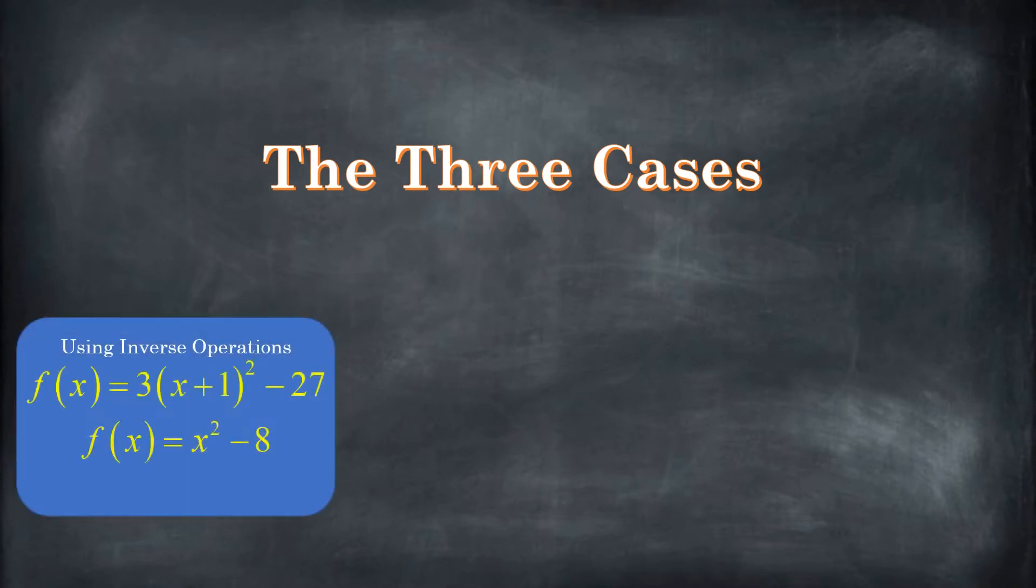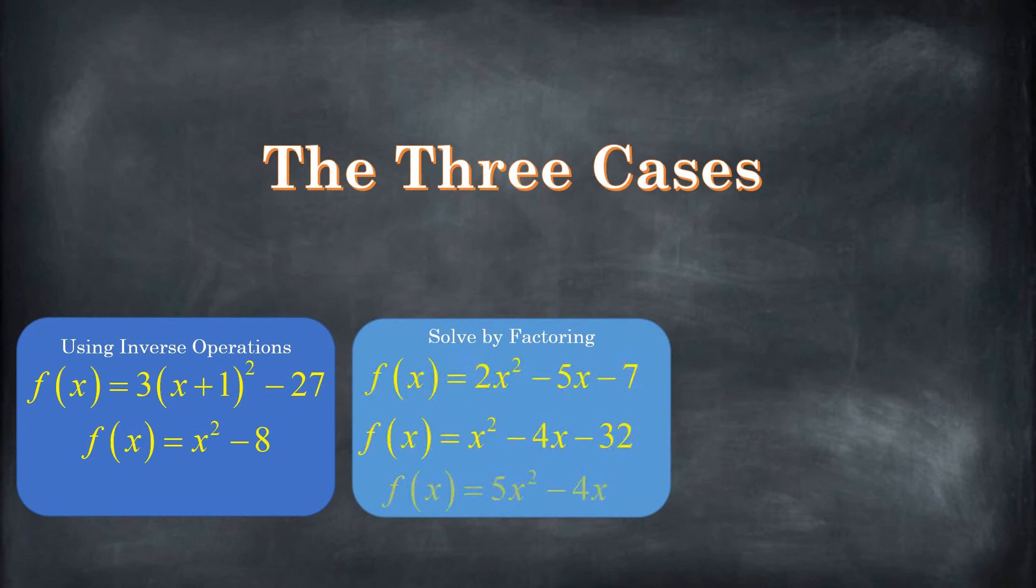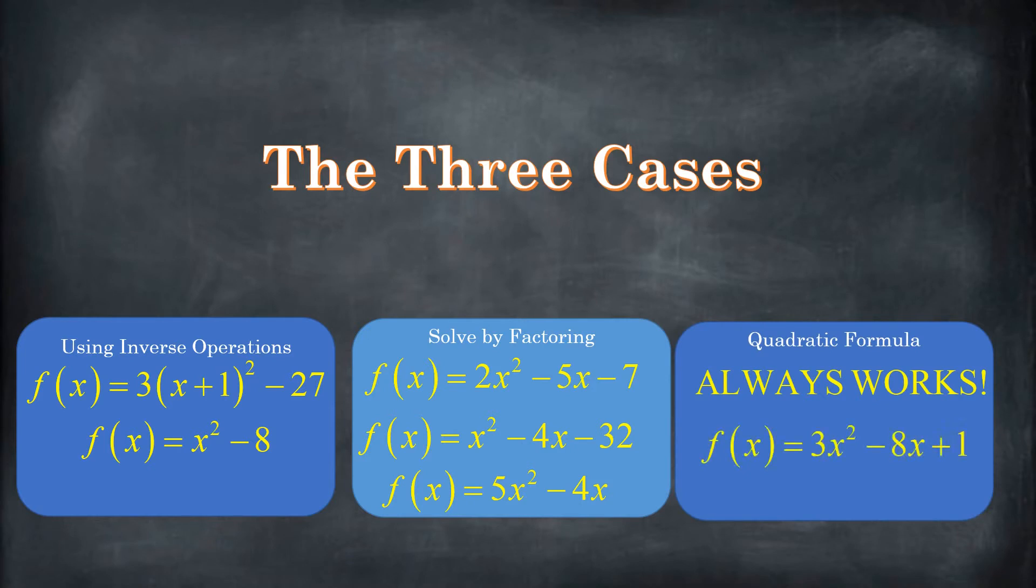There's three ways. You can use inverse operations, by far the easiest. You can find x-intercepts by factoring and then solving, or you can use the quadratic formula. Quadratic formula is the one that always works. You can't always factor. You can't always use inverse operations. So you might be wondering, hey, wait a minute. I know that if this always works, why don't I just always use it? And the reason why is, well, because it's tricky.